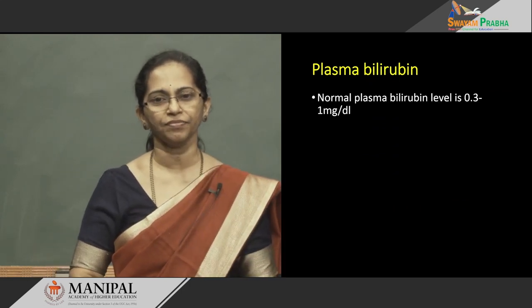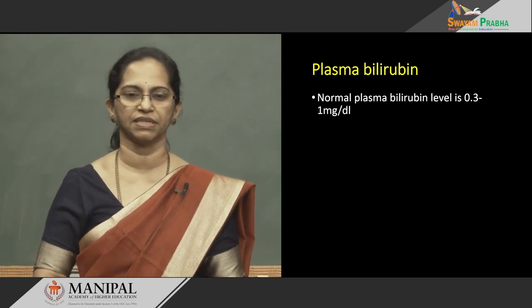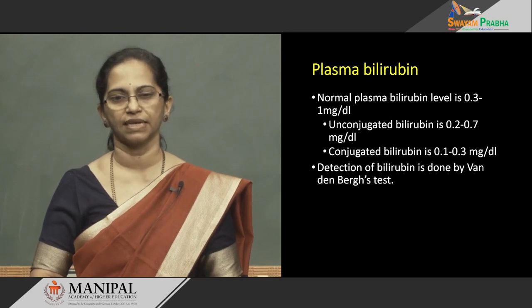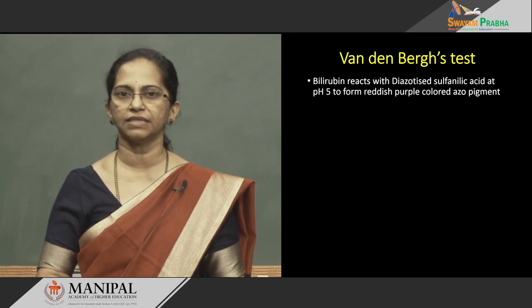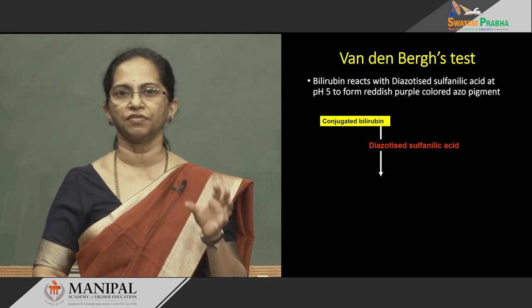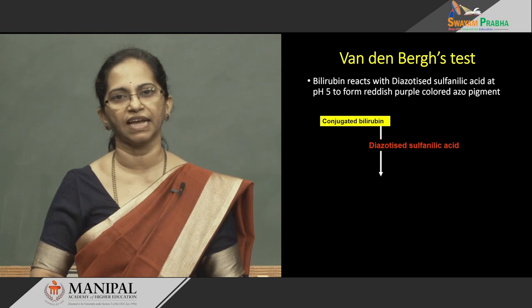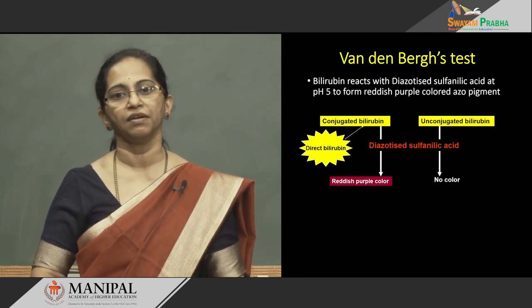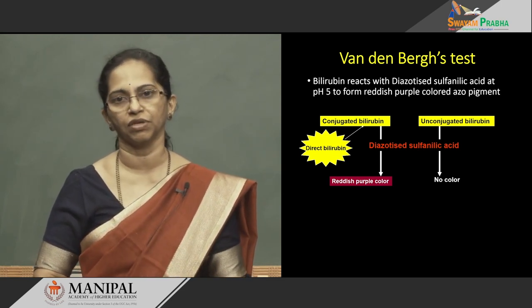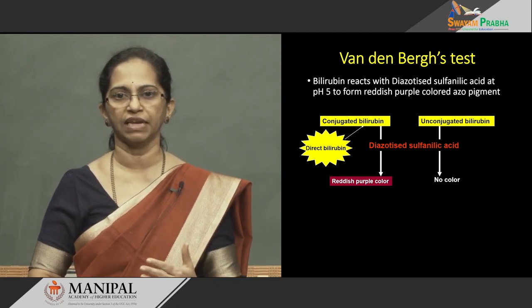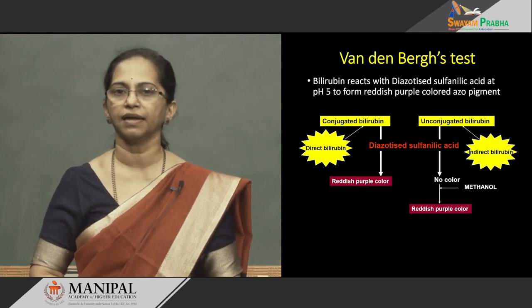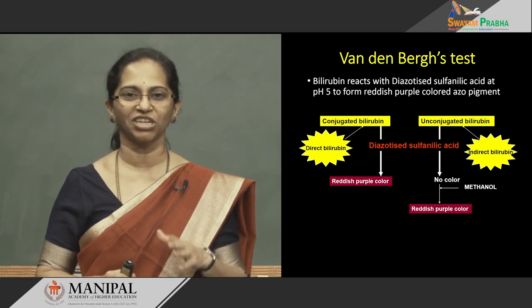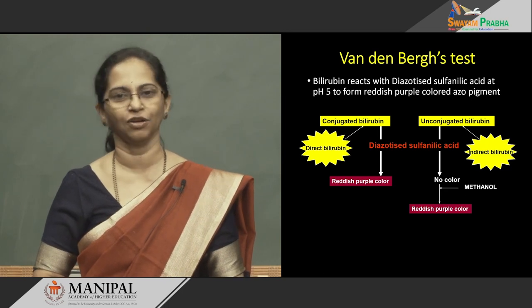Normal plasma bilirubin is about 0.3 to 1 milligrams per deciliter, comprising unconjugated and conjugated varieties. Bilirubin is detected by the Van den Bergh test, which distinguishes direct (conjugated) bilirubin from indirect (unconjugated) bilirubin. Direct bilirubin reacts immediately with diazotized sulfanilic acid to give a purple color. Indirect bilirubin requires the addition of methanol first; only then does it produce a reddish-purple color. Direct bilirubin is conjugated; indirect bilirubin is unconjugated.